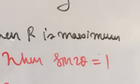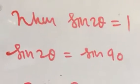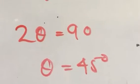So sine 2 theta is equal to 1 because 1 is the maximum value of a ratio. So 1 is sine 90, 2 theta is 90, theta is 45.